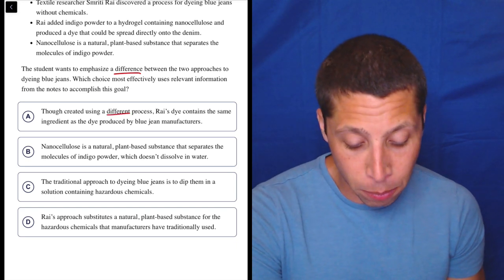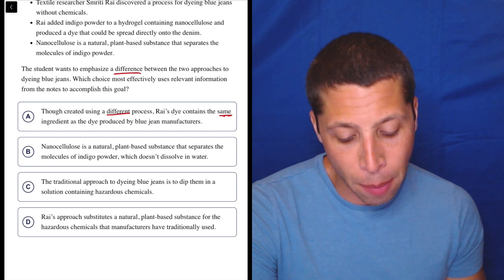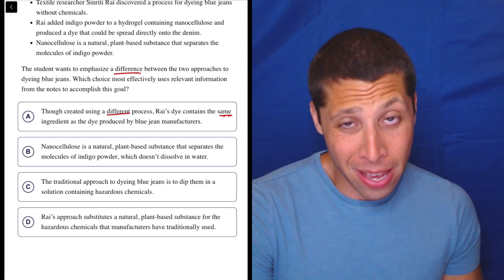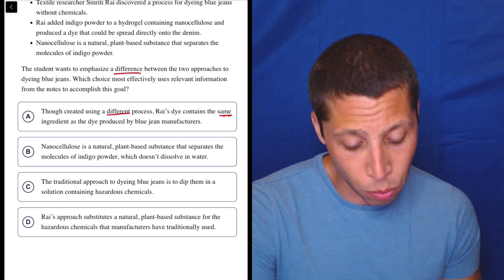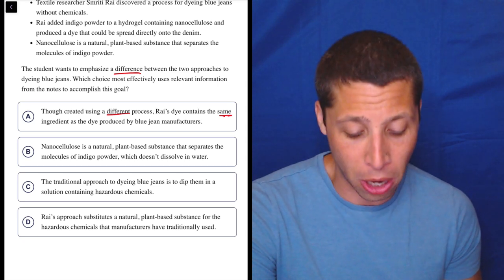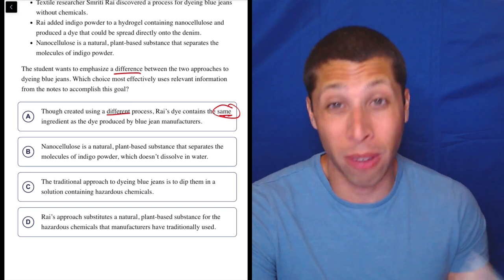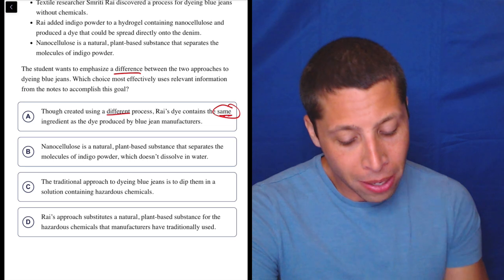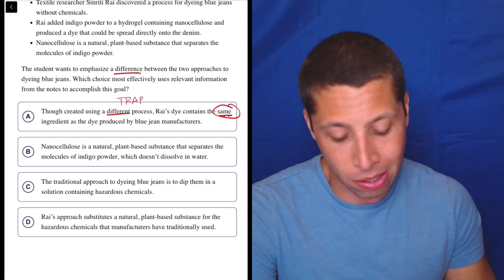Though created using a different process, Rye's dye contains the same ingredients as the dye produced by blue jean manufacturers. So maybe that's good. It says they have a different process, so that might be what we're talking about, but I don't love that it says they're the same. We weren't told to also have a similarity, so we don't love that. I'd leave this choice in for sure, but honestly it feels a little bit like a trap that they're just using that word difference. So I don't know. Let's look at B.